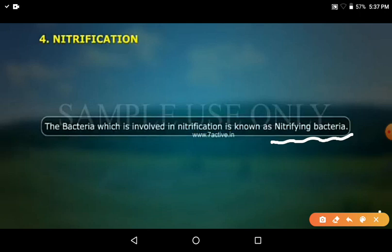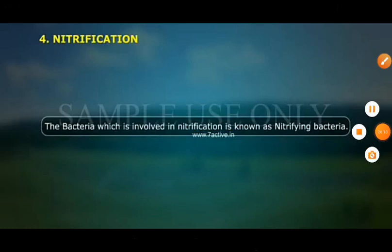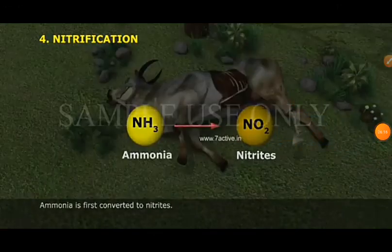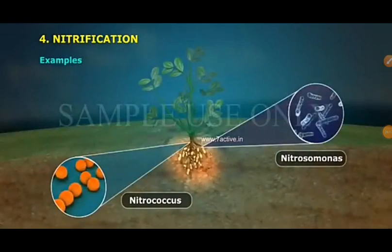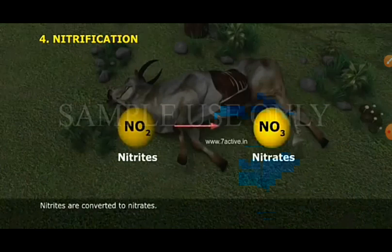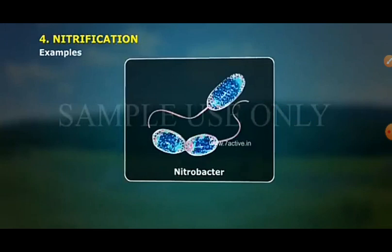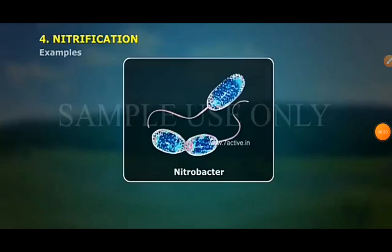Ammonia is first converted into nitrites, and then into nitrates. The process of conversion of ammonia into nitrates is called nitrification.